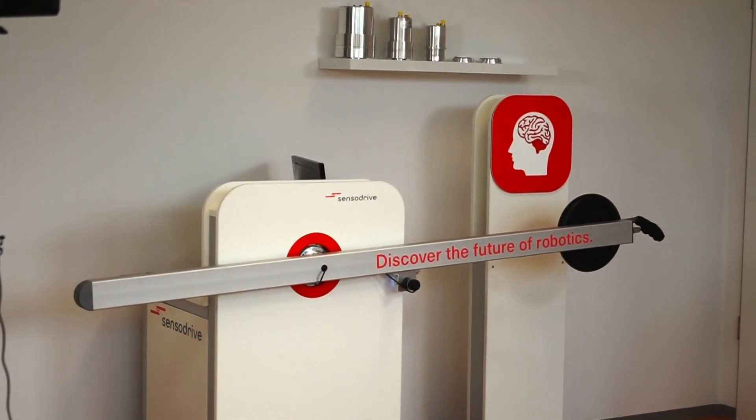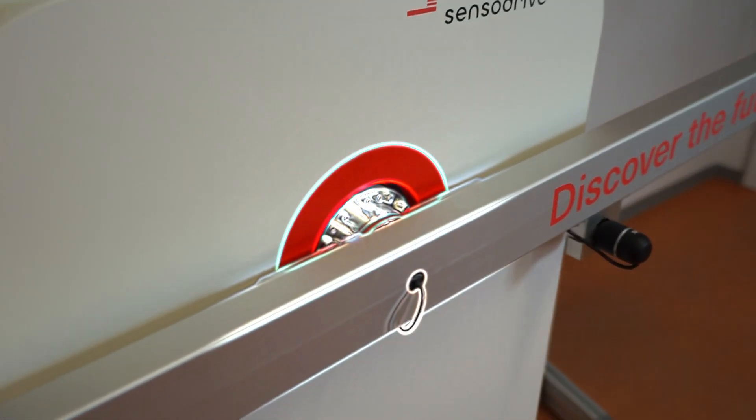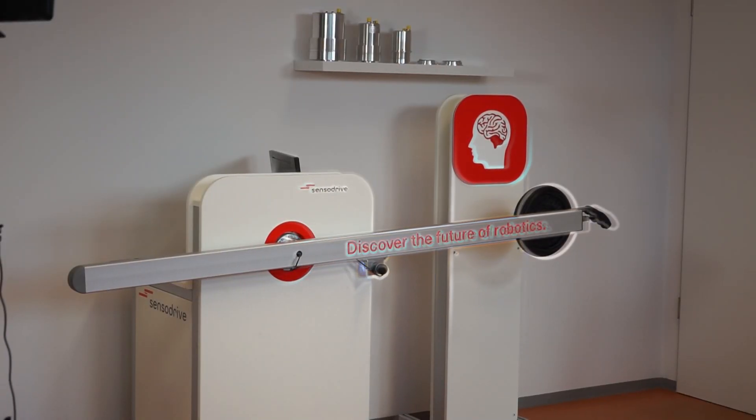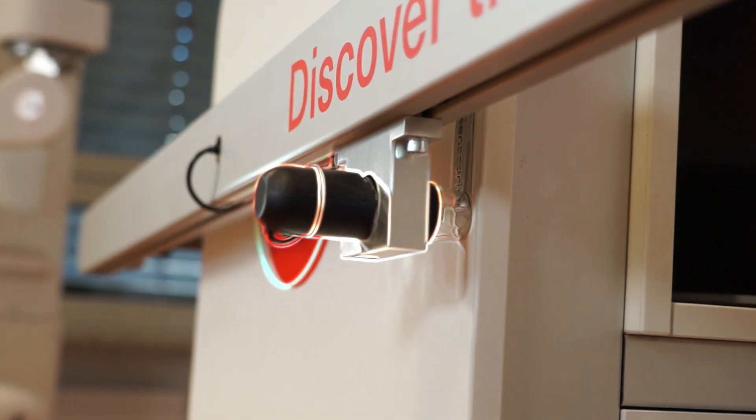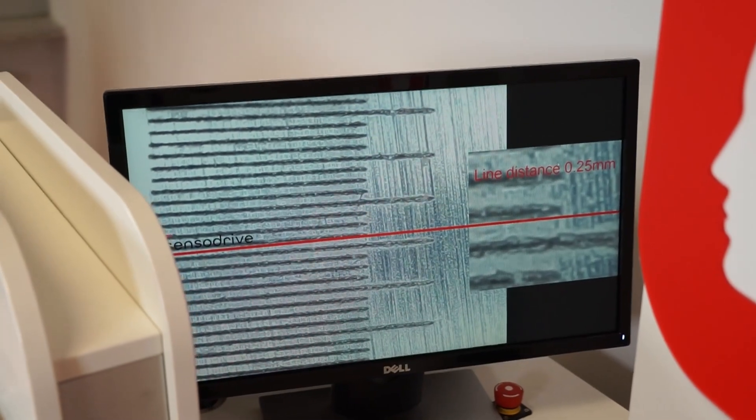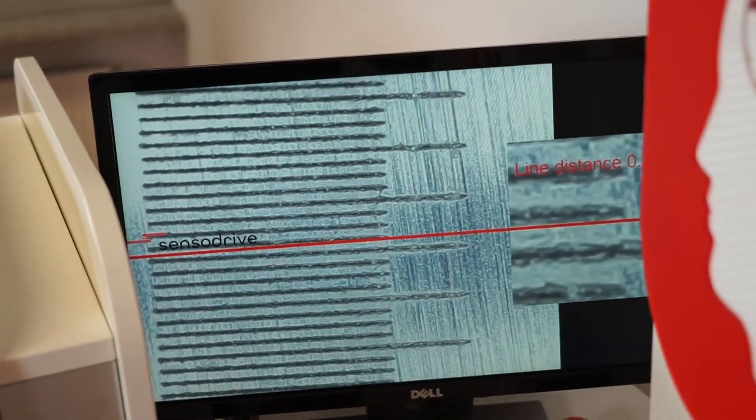This demonstrator simulates a mechanical structure with a sensor joint in the middle and a lever with the mass. A microscope camera is attached which films a scale with 0.25 millimeters division. Here you can see the live image from the camera.